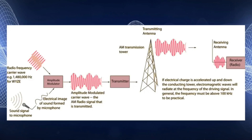After the modulation process, the modulated carrier wave will be sent to an amplifier that will magnify its energy. The amplified modulated carrier wave is then sent to the transmitting antenna. The changing current in the antenna generates radio waves that travel in all directions. The ionosphere helps the radio waves to bounce back and they will be received through a receiving antenna.